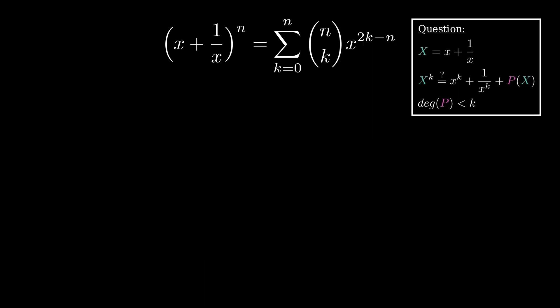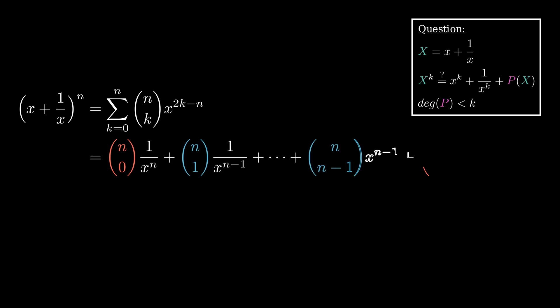We can expand the sum, and notice how the powers of x are symmetrical. Not only this, but because the binomial coefficients are also symmetrical, we can factor out the first and last terms, the second and second to last terms, and so on.